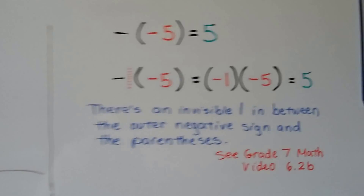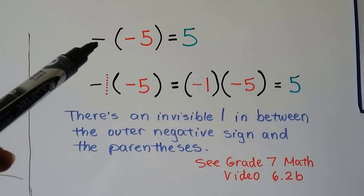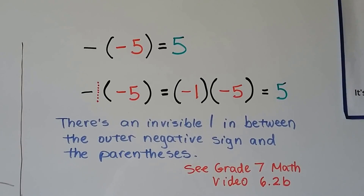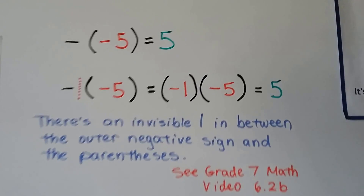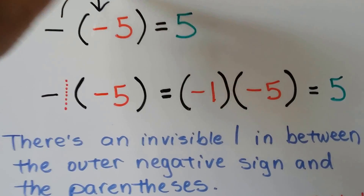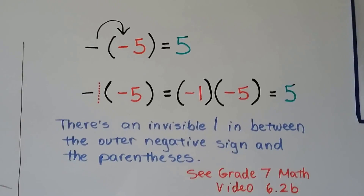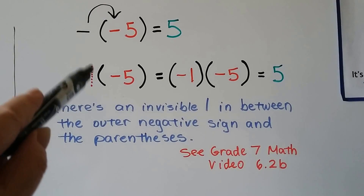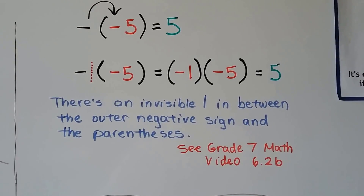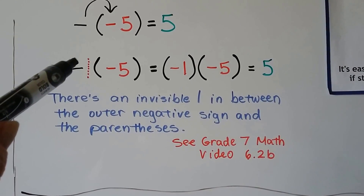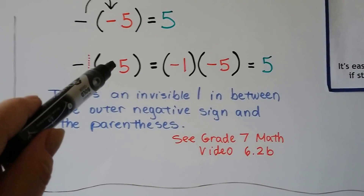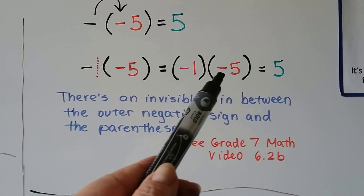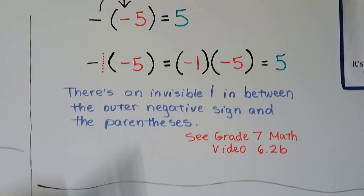Here's something important: you're going to see a negative sign — a minus sign — in front of parentheses containing a negative number. This is telling us to distribute that negative to inside the parentheses. There's an invisible 1 between that negative sign and the parentheses. You have to imagine there's an invisible 1 there. Then you distribute the negative 1 to the negative 5 — two negatives make a positive — so that's positive 5. It's like doing negative 1 times negative 5.